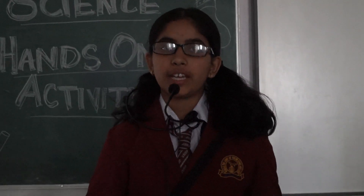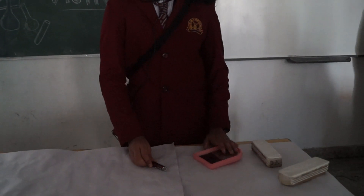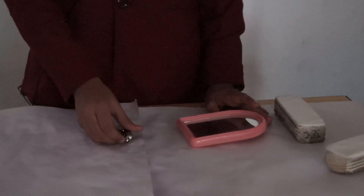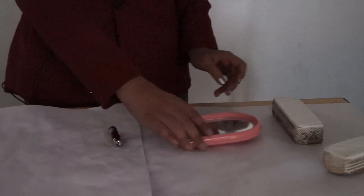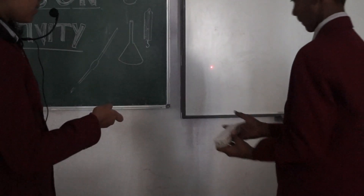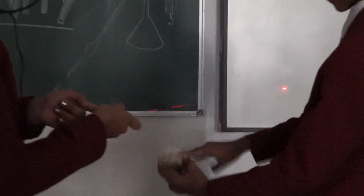Friends, as we all know that light travels in a straight line, and today we are going to verify it using various materials like chalk dust, a mirror, and a laser light. First, collect some chalk dust from the blackboard and use a laser light — but make sure that you don't point it at anyone as it can cause harm. When we hold the laser light and point it at the wall and spray some chalk dust on it, we can see that the light is travelling in a straight line and it is actually creating a traced path.